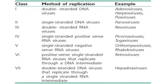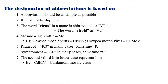Examples of double-stranded DNA viruses include adenoviruses, herpesviruses, and poxviruses. Single-stranded DNA viruses are also given as examples in the Baltimore classification. These examples illustrate how the Baltimore classification applies across different virus types.